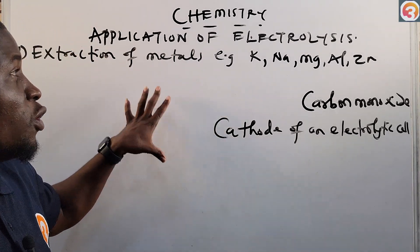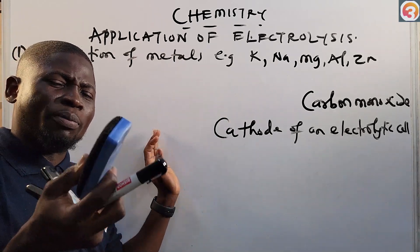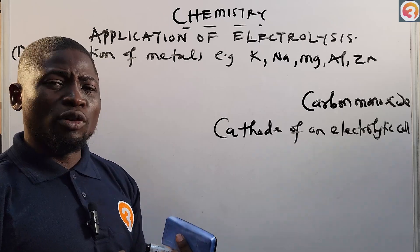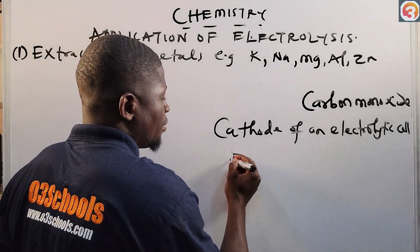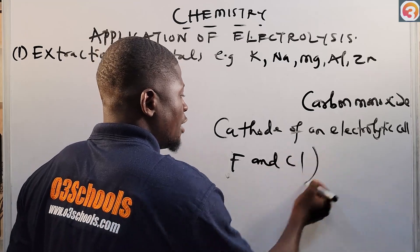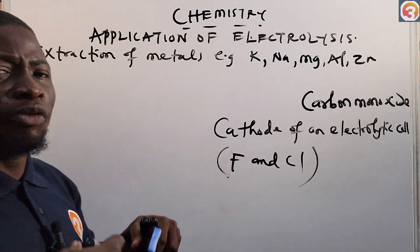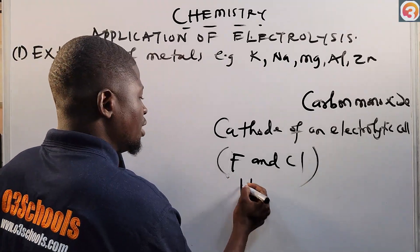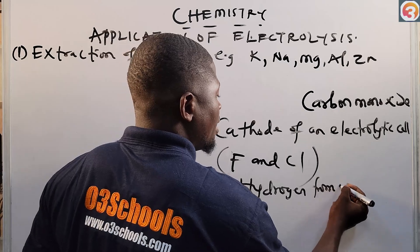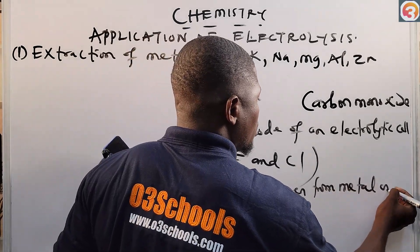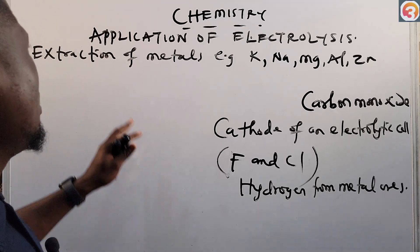Another application of electrolysis is that it can be used to obtain halogens such as fluorine and chlorine. It can also be used to obtain hydrogen from metal ores.